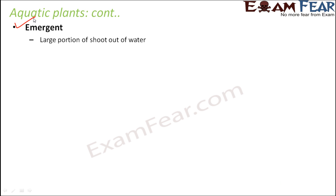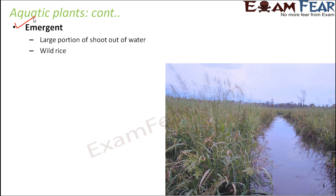The third type of plant is emergent plants — they emerge out from the water. A large portion of the shoot comes out of the water. Think of wild rice: rice plants need a lot of water, and if you have seen paddy fields, they have a huge amount of water, almost like a pond. But the plants come out of the surface — they have emerged out of the water — that is why they are called emergent plants.